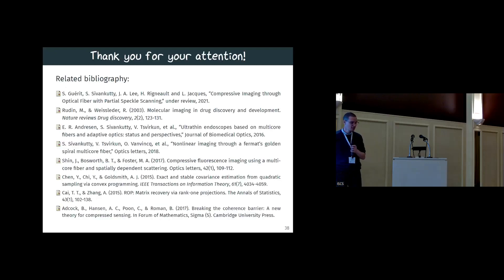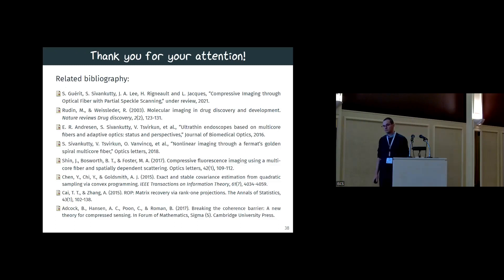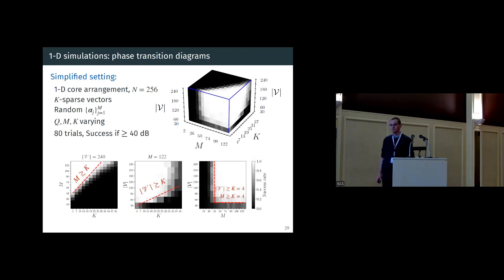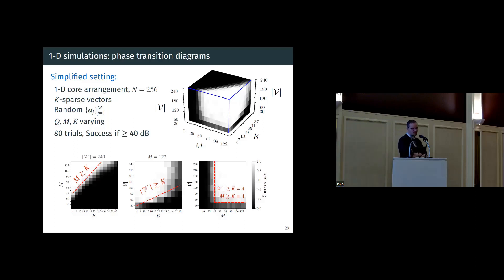Thank you for your attention. A quick question: you motivated this work by wanting to image very deep into tissue, but you presented a two-dimensional version, and a 3D extension would require that the tissue is more or less transparent with little scattering — which is not the case in the brain. Diffusion will greatly limit what you can see. How do you imagine reaching the point you motivated?